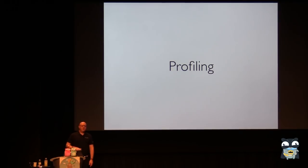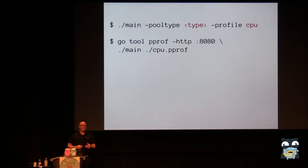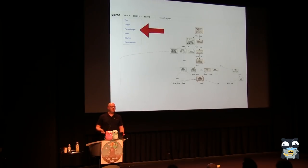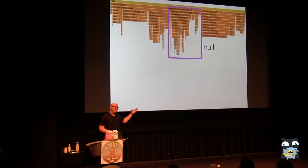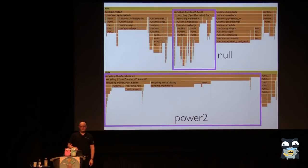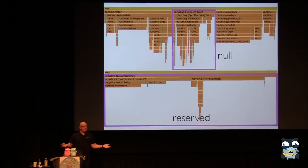For profiling, I set this up from the executable using flags to set the pool type and request CPU profiling, then pass it to go tool pprof, telling it I want a local web server — passing it the executable and the profile data. It pops up my web browser, and in the View menu there's a Flame Graph option. The null strategy shows most time in GC; sync is a little better; power-of-two better still; and the reserved strategy shows almost the entire program doing the work I wanted, with very little occupied by anything the runtime is adding.